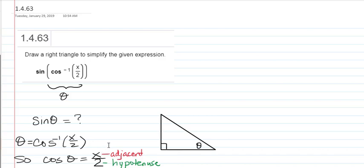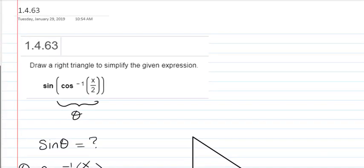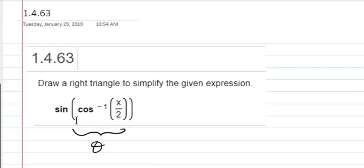Hi, I'm Ms. Hearn. Let's get started. In this video, we're going to draw a right triangle to simplify an expression that involves an inverse trig function. And the expression is sine of inverse cosine of x over 2.